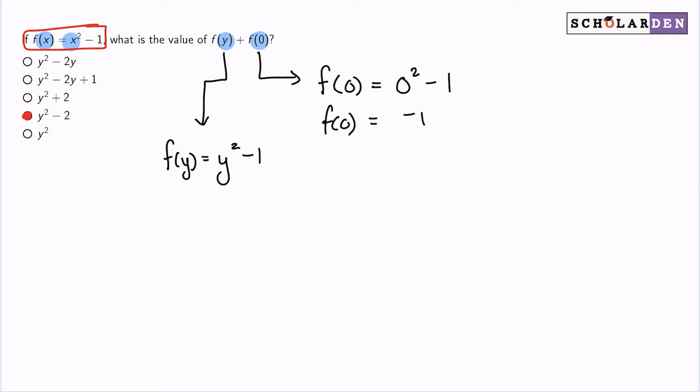So since our goal here is to add these two together, I will then add these two together. And so y squared minus one, plus negative one, which is the same thing as saying minus one, we will have y squared minus two.